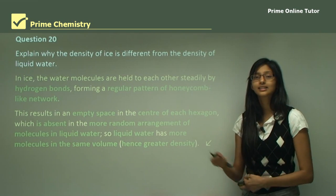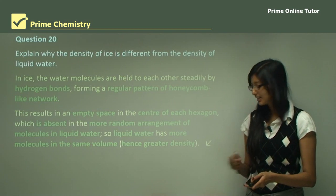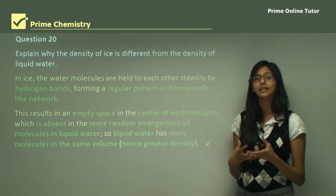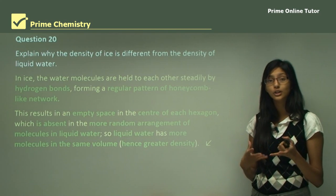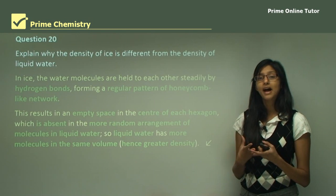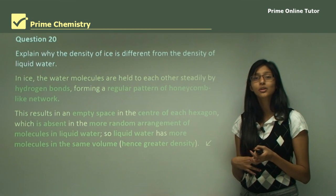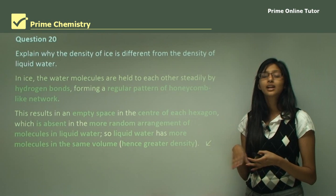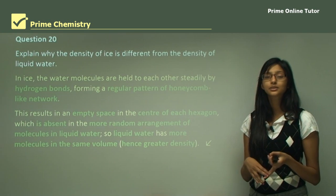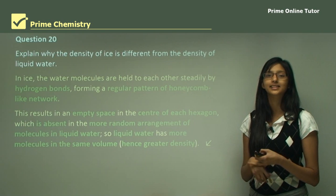In this session we looked at what density is — the mass of a substance divided by the volume it occupies — and we saw that the density of water is very unusual, because unlike other substances, when water is in solid form its density decreases.